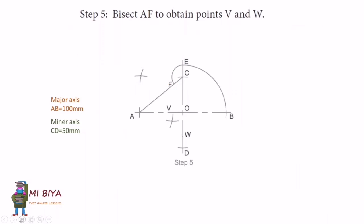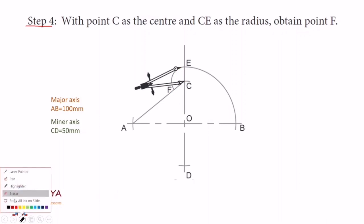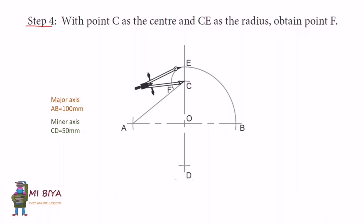Step 5 is a complicated step. You need to obtain points V and W. Most students get confused here. For now, ignore these two arcs — I'm going to show you how we obtain them. Let me go back to the previous slide and erase this line so I can demonstrate properly.